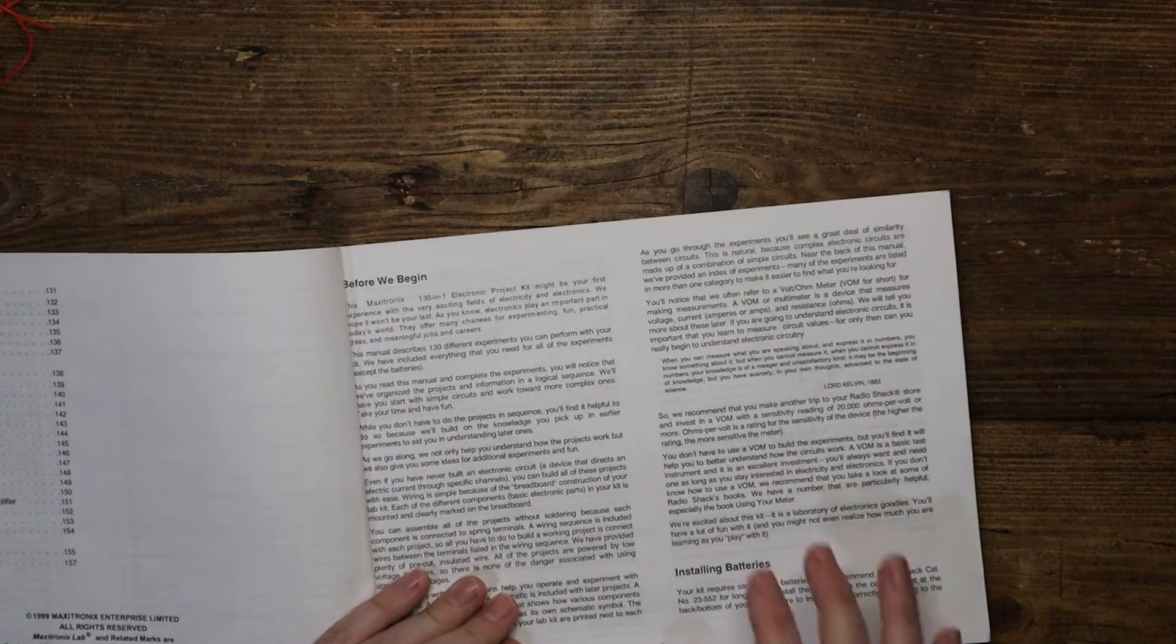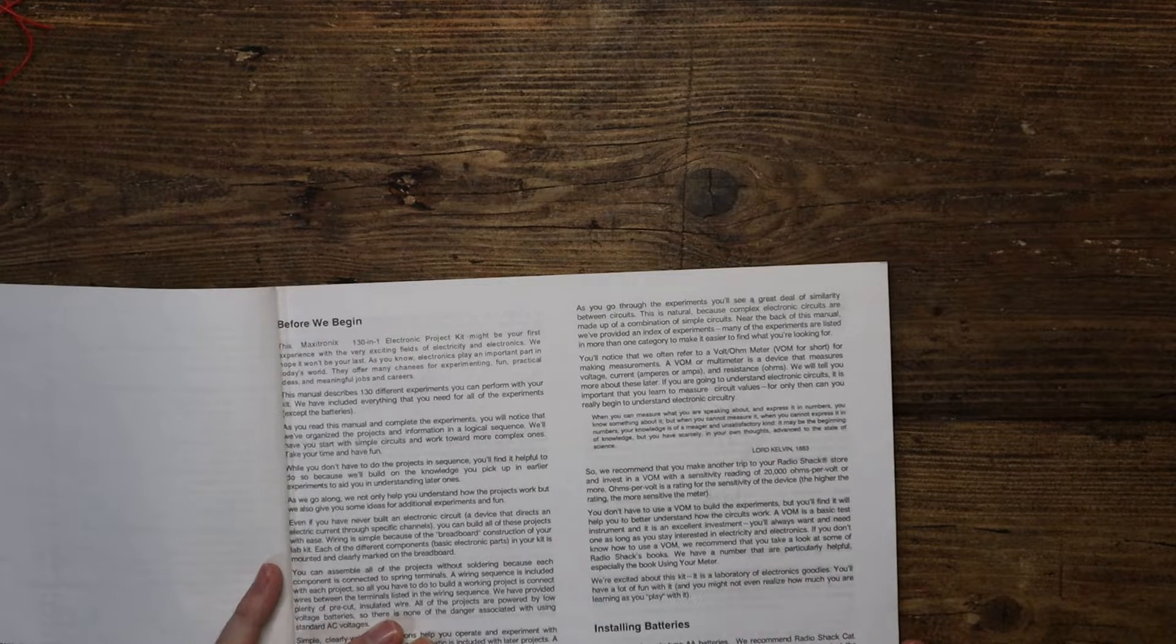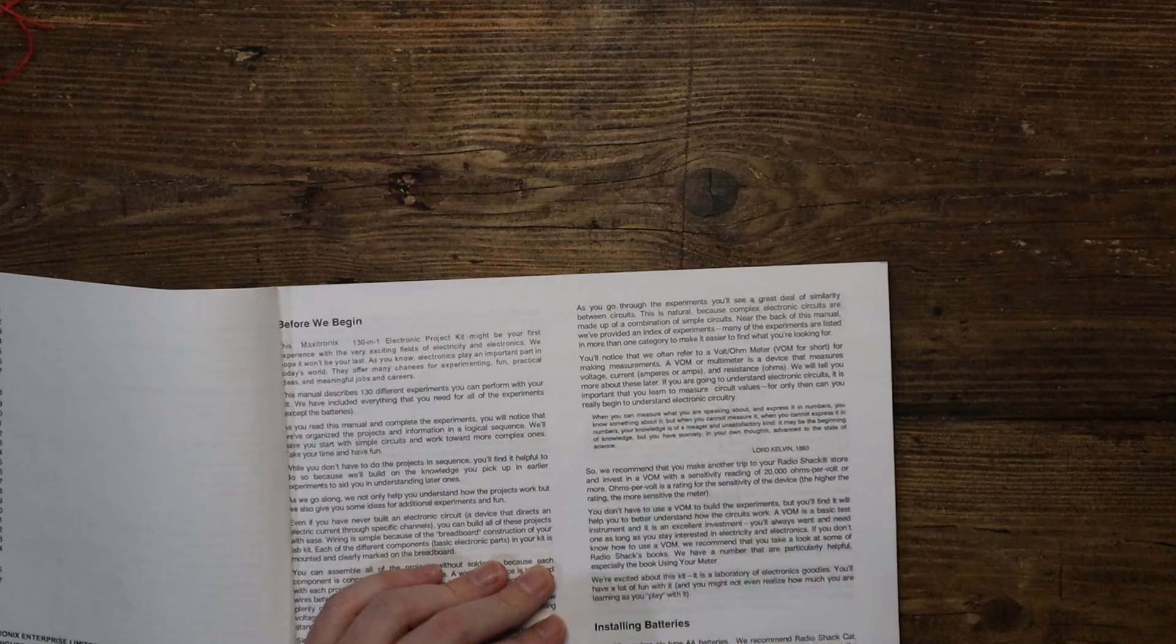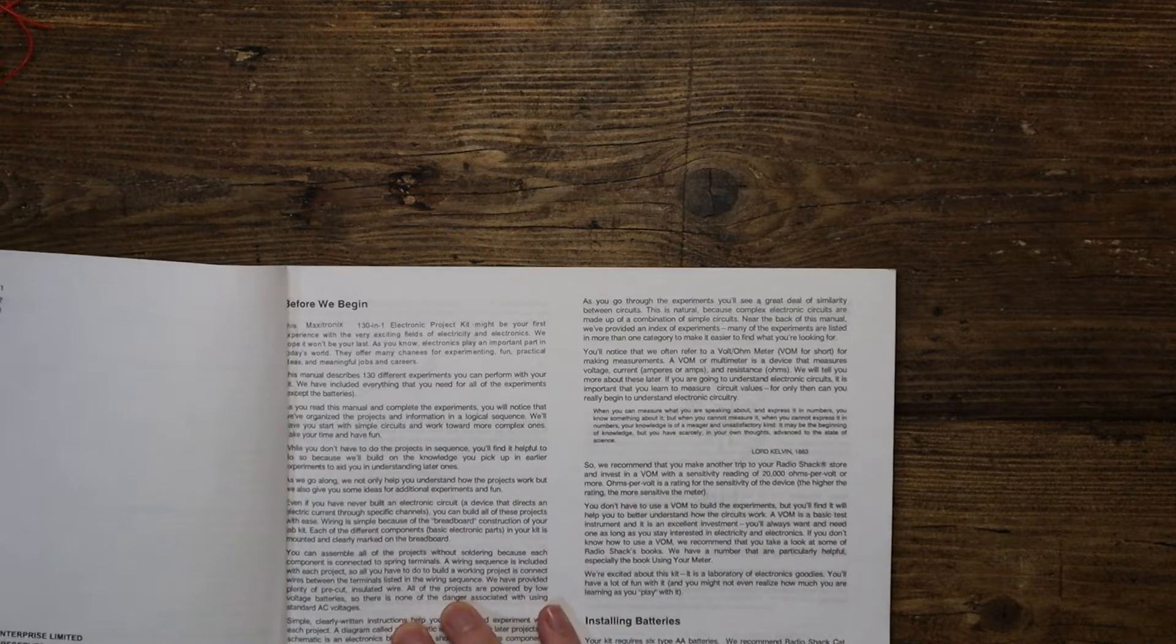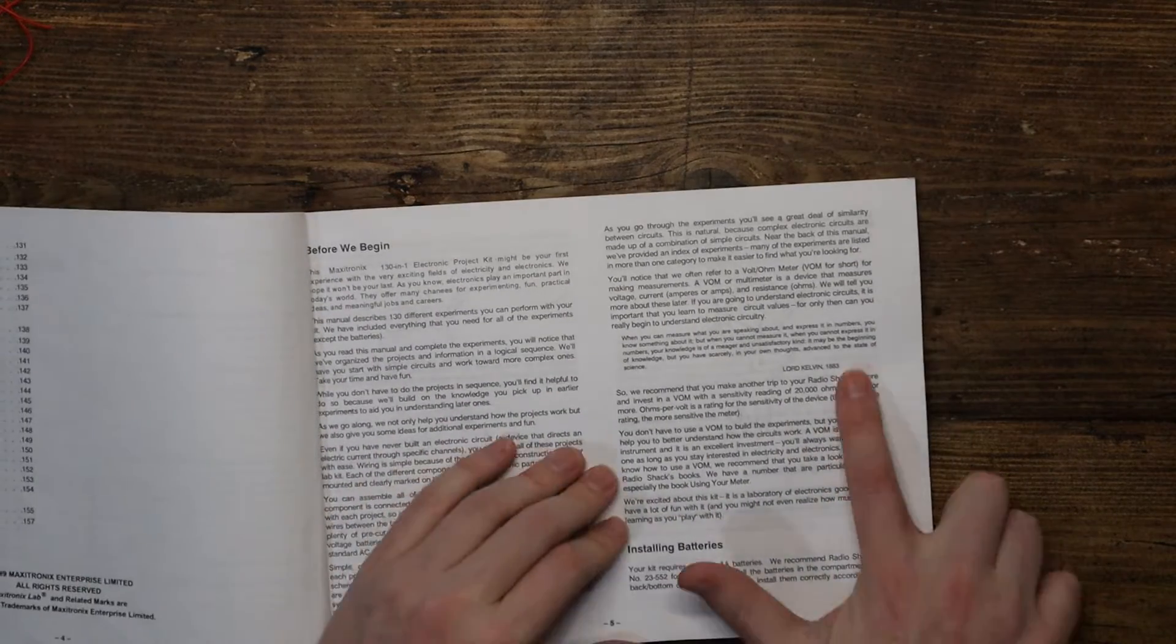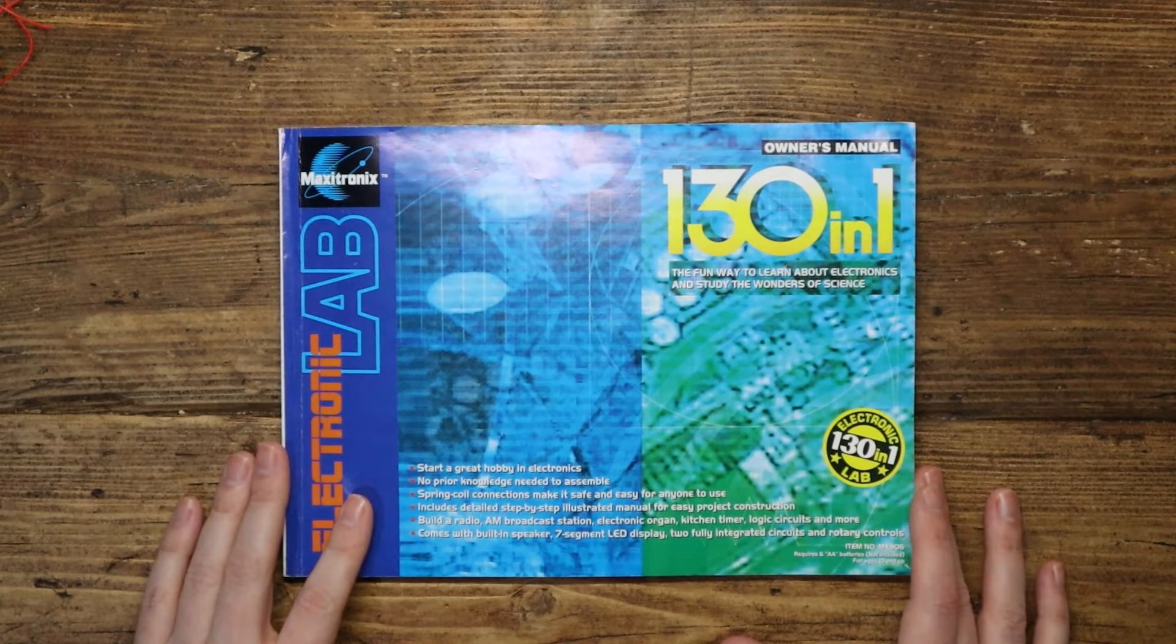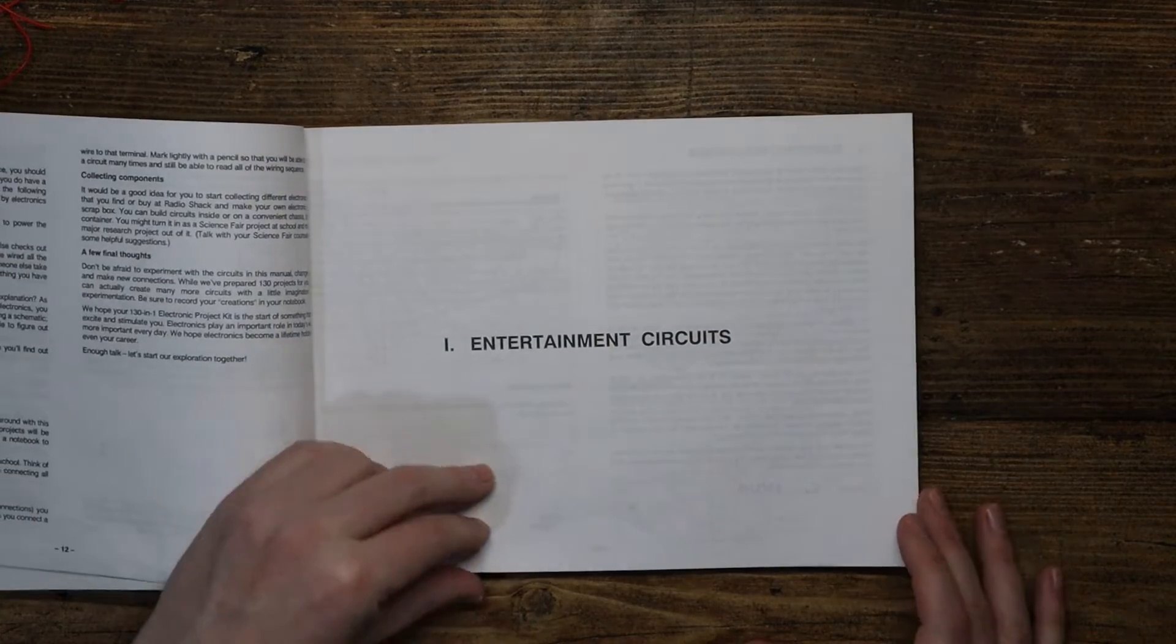And I think what's interesting about this is it's really taken you from the simplest possible ones at the very beginning. It gives you a bit of an explanation before we begin. This is exciting. We've even got a quote here from Lord Kelvin, 1883. When you can measure what you are speaking about and express it in numbers, you know something about it. But when you cannot measure it, when you cannot express it in numbers, your knowledge is a meager and unsatisfactory kind. So buy your electronic lab kit today. You'd have to wait a bit though, 1883, for this thing to be available. This is from Radio Shack, it looks like here. So I'm going to assume it's a Radio Shack brand, but you can get these from Argos and a bunch of other places in the UK. Right, enough dallying. Let's pick a couple of these and we'll give it a go.